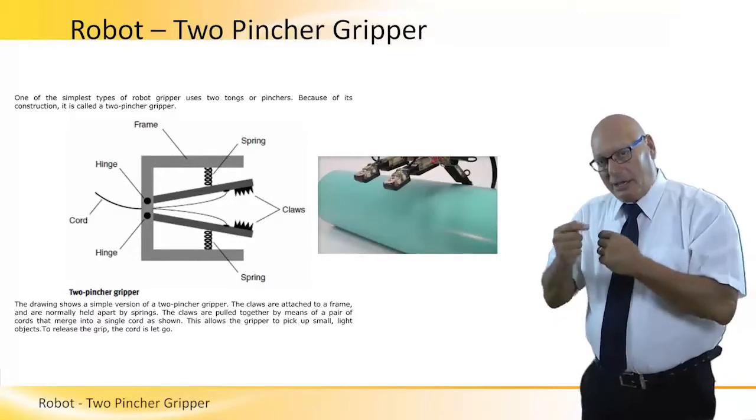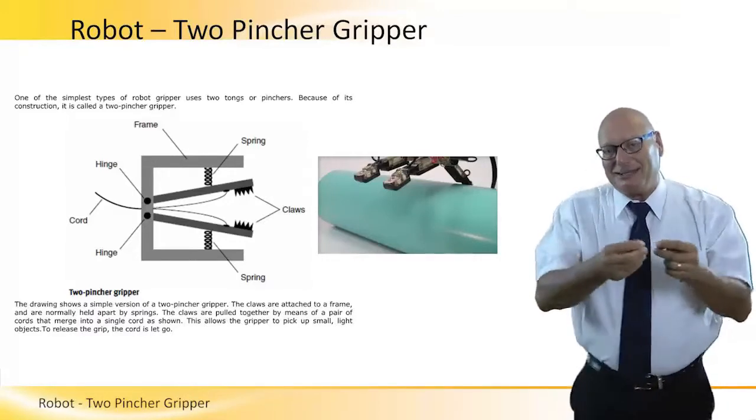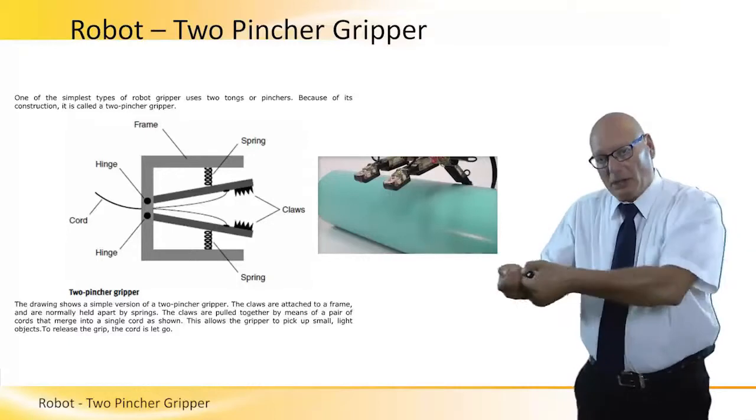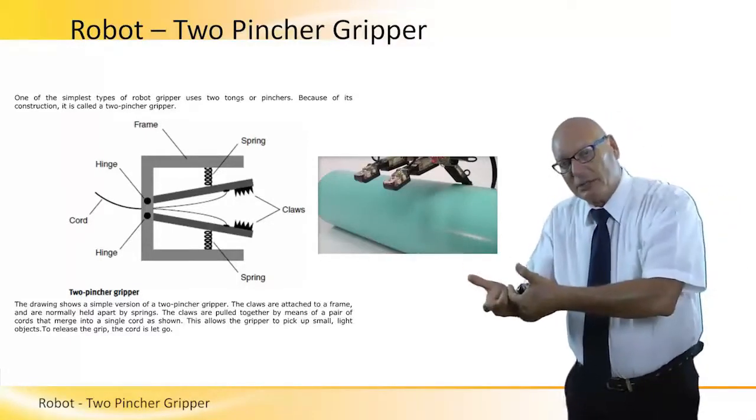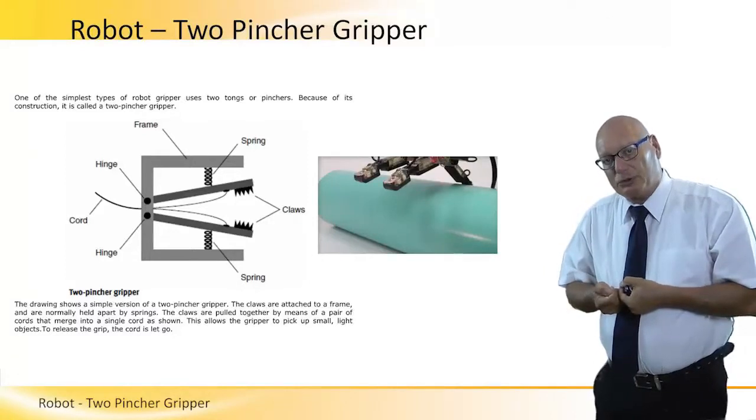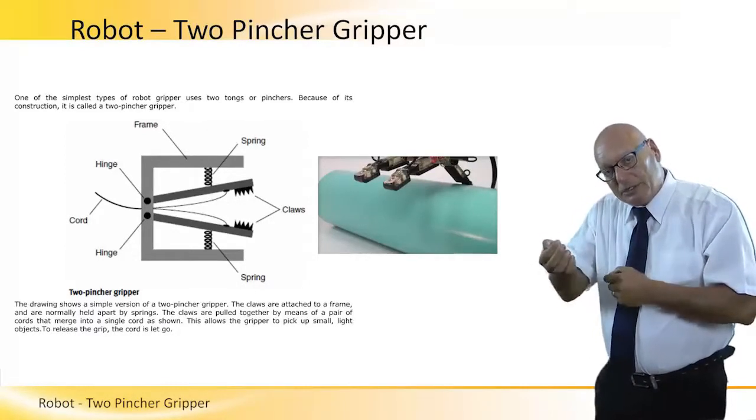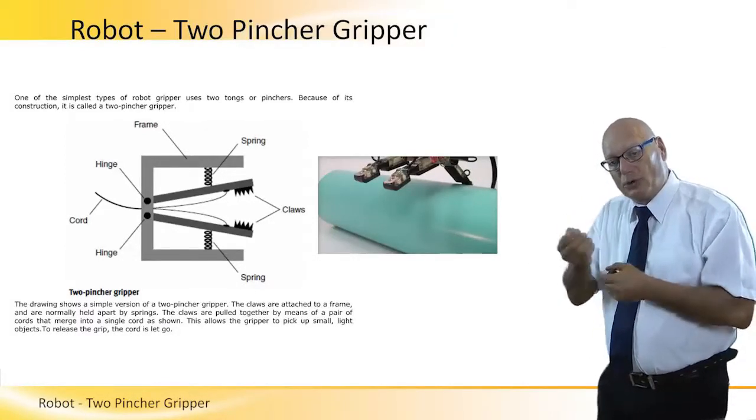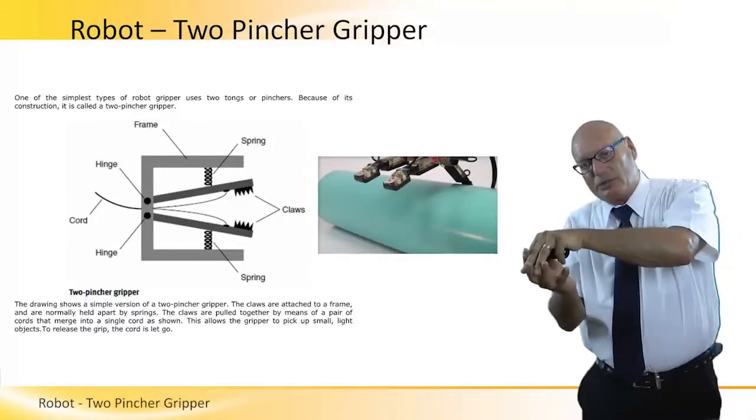The opening of the cord can be either digitally controlled, meaning open or release, or can be an analog type of operation using a motor. As the motor rotates, the cord is pulled and the claws get closer.